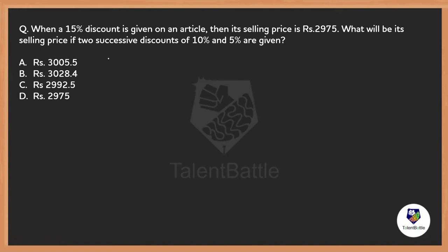What the successive discount formula says is: whenever there is a successive discount, you use the formula a + b + (a×b)/100, which we have discussed in the masterclass sessions. Here, 'a' is the first increase or decrease — if it is a decrease we take minus a — and 'b' is the second time value.